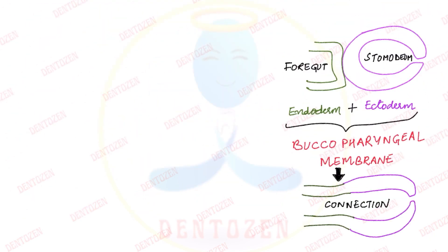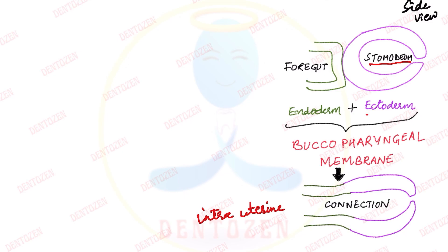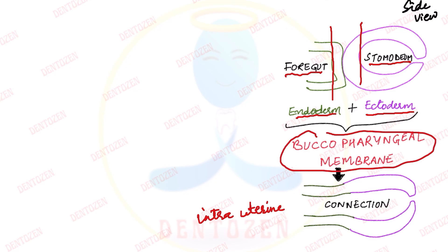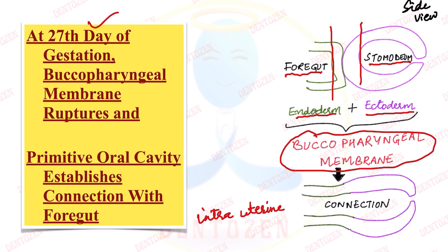In the primitive mouth, tooth development starts in intrauterine life — when the baby is growing inside the mother's uterus. When we look at the primitive mouth from the side view, there is a stomodium, the primitive mouth, which is lined by ectoderm. This mouth is in contact with the foregut, which is lined by endoderm. Together they are known as the buccopharyngeal membrane. At 27 days of gestation, this buccopharyngeal membrane will rupture, and the stomodium will establish a connection with the foregut.